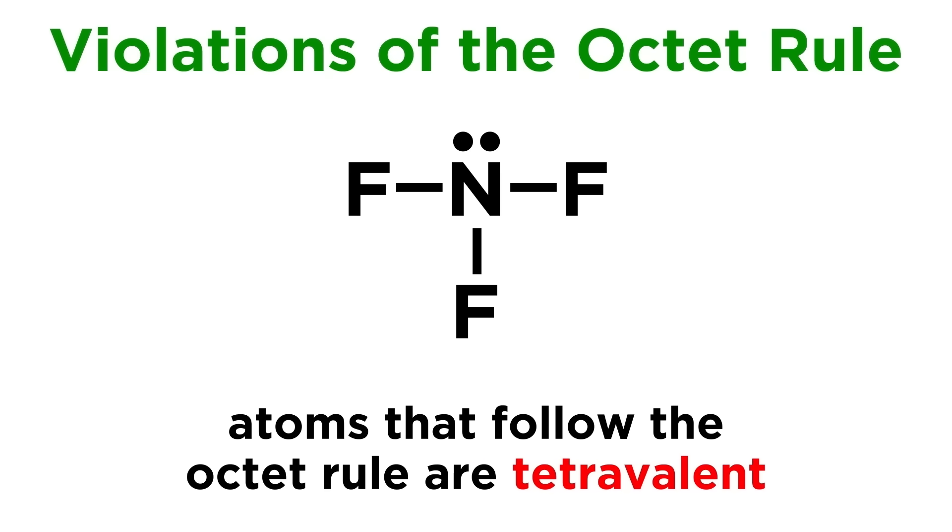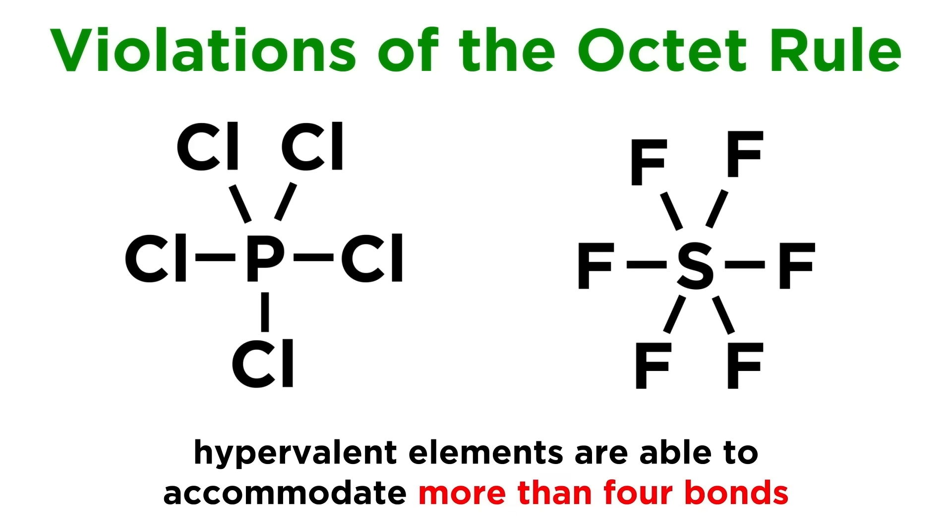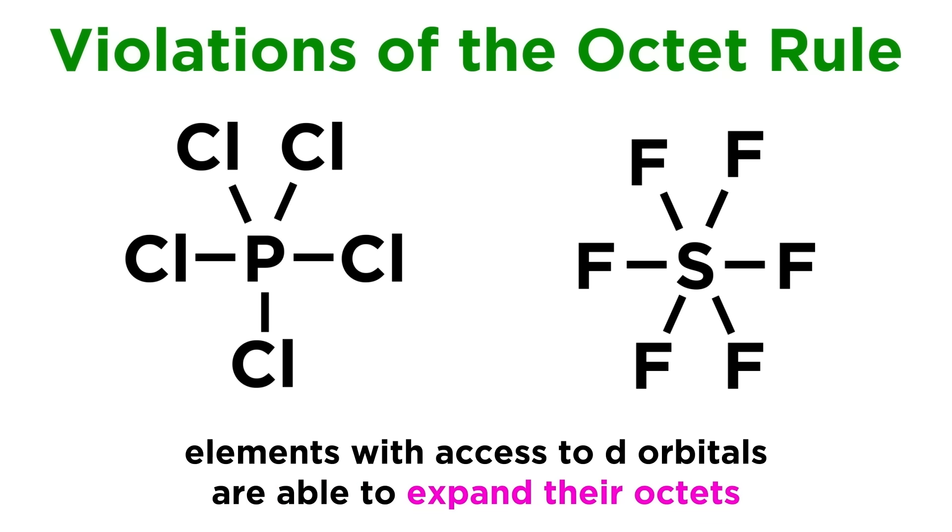In addition, while elements that follow the octet rule will be tetravalent, meaning they will have four coordination sites, there are also hypervalent elements like phosphorus and sulfur. These can have five or six bonds respectively, which exceed the octet rule in terms of the number of electrons that can be found around a central atom.